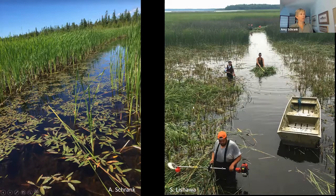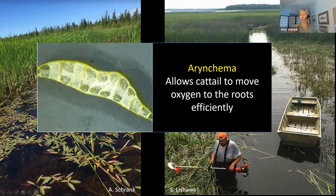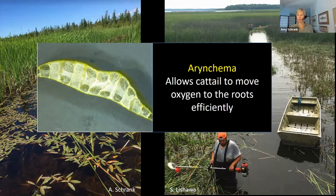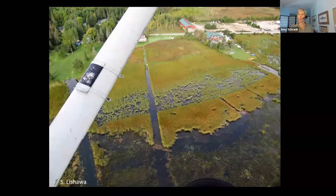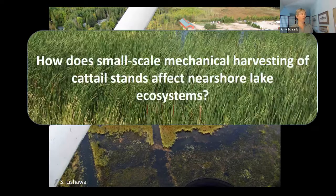Channels created by underwater cutting can open up more habitat space and increase edge habitat, which can be beneficial for fish. This approach is uniquely suited for inland lake systems like Minnesota, where people already create channels to let their boats in and out. Currently with an aquatic plant management permit, landowners can get a 15-foot-wide swath cut from shoreline to open water. Our overall question is: how does small-scale mechanical harvesting of cattail stands affect nearshore lake ecosystems? Can this be good for fish and consequently good for lake ecosystems overall?